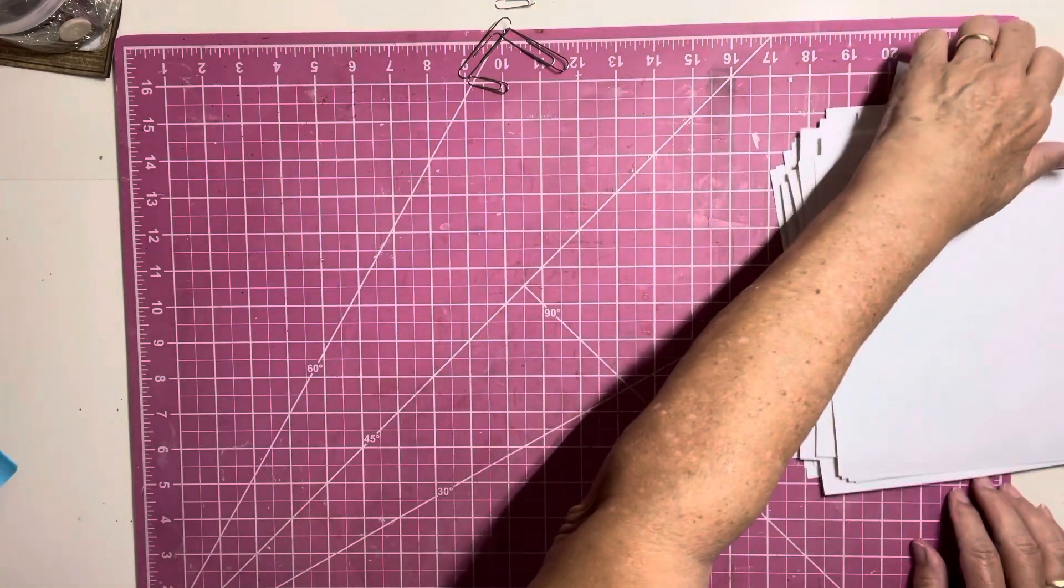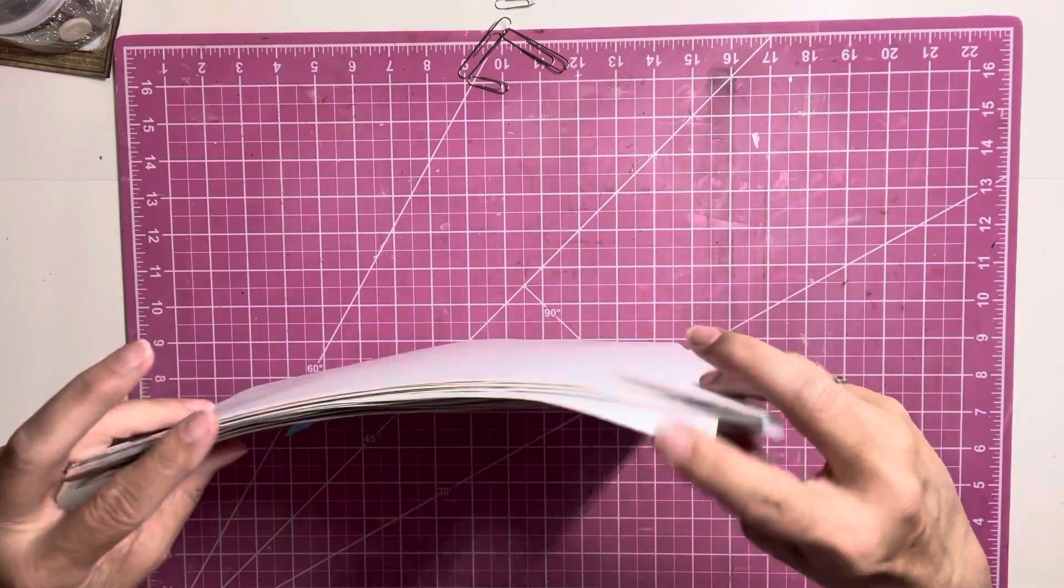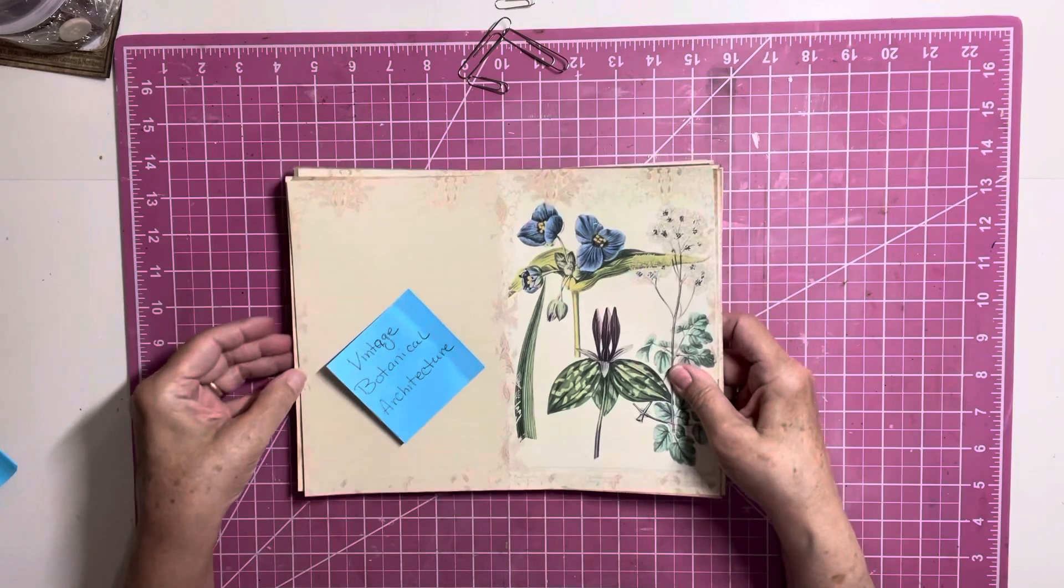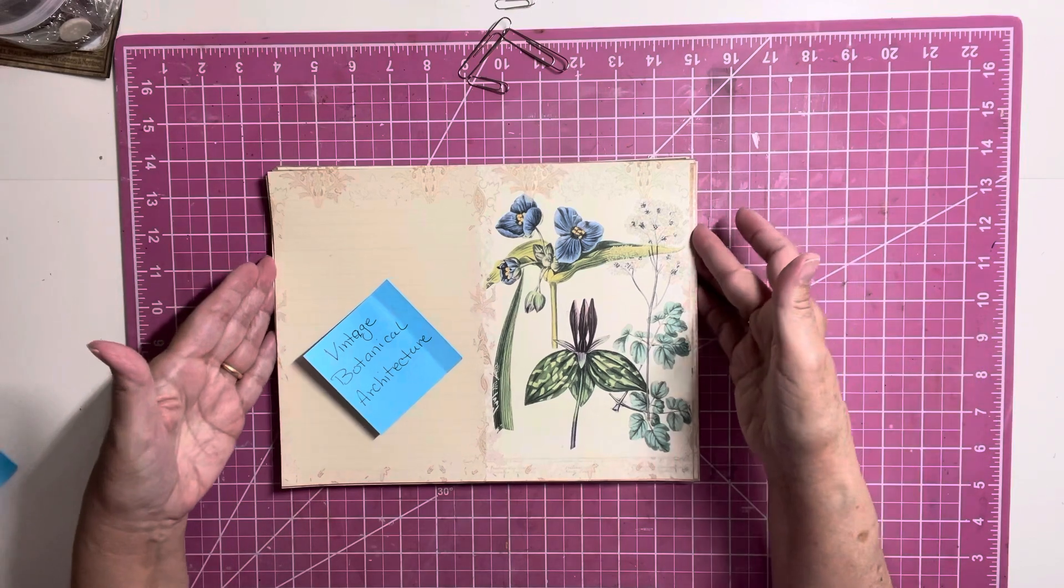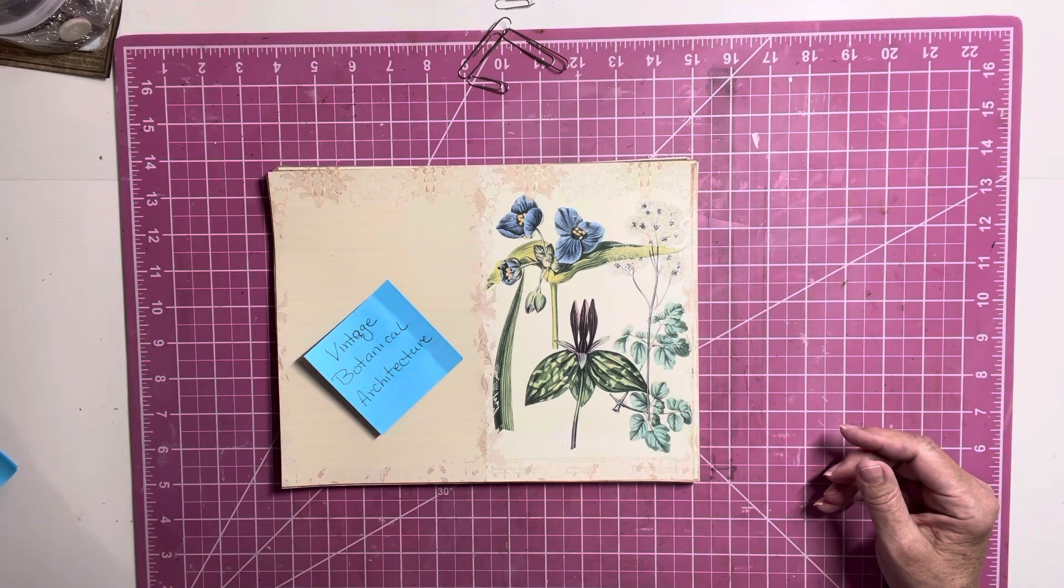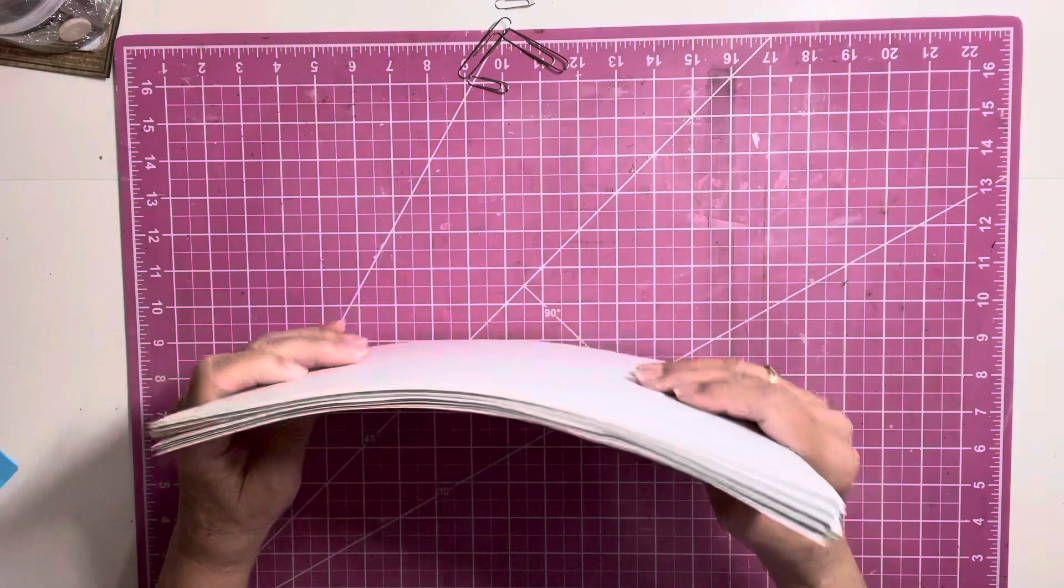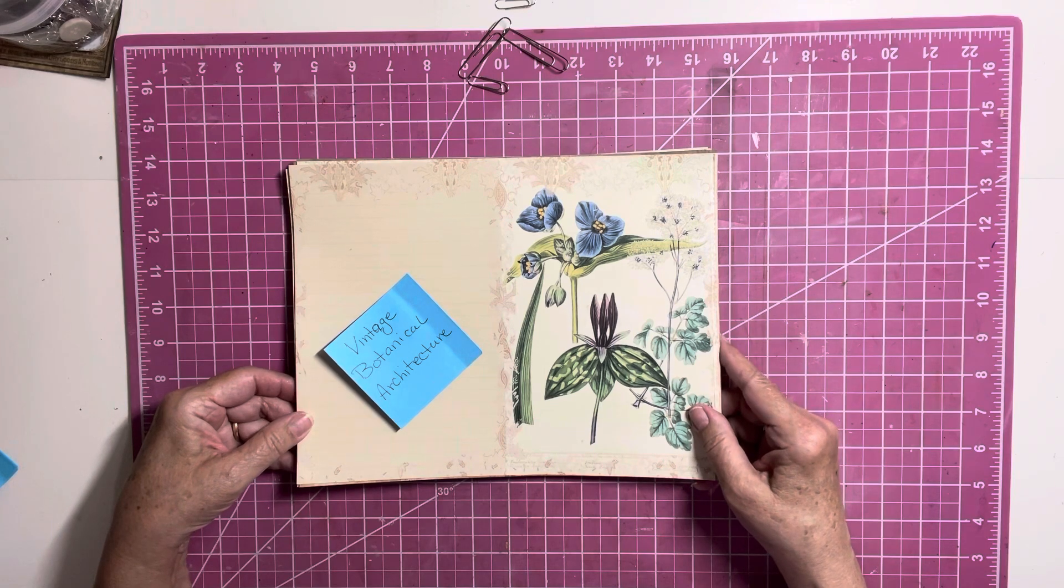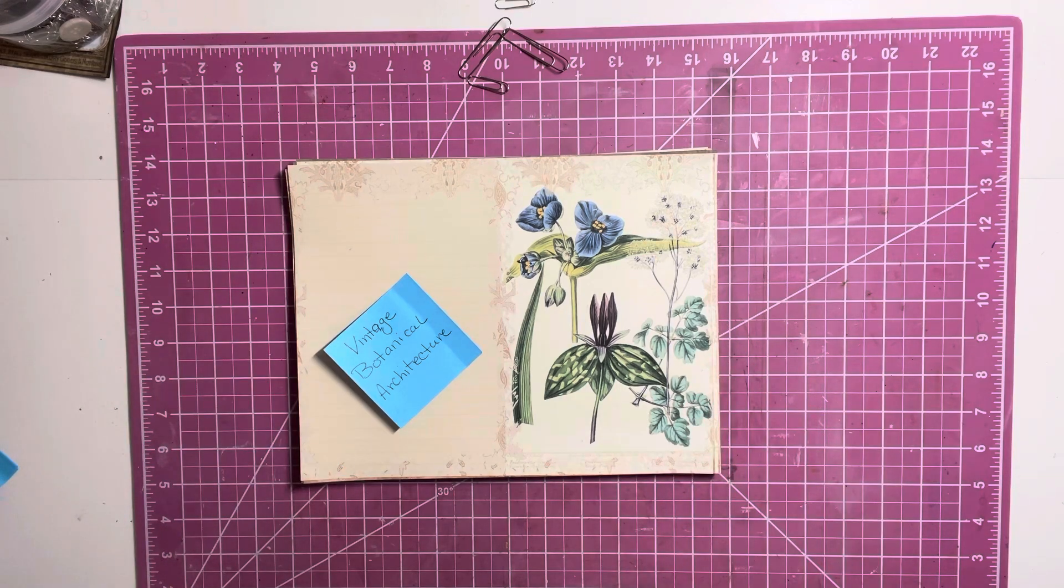So, as you can see, this is quite a lot to play with in these kits. So this is Vintage Botanical Architecture Collaboration Kits. I will have all the listings below to find the kits and to see who's on the team. So, thank you, Tanya and Neneen for such beautiful work. I will be having a lot of fun playing with and creating with these beautiful kits.